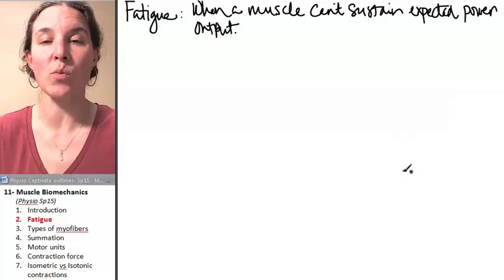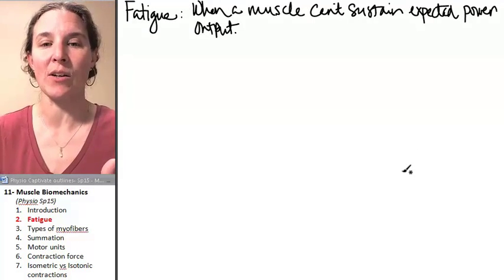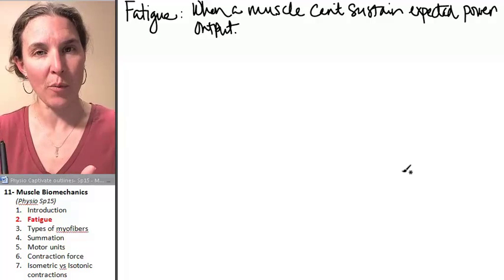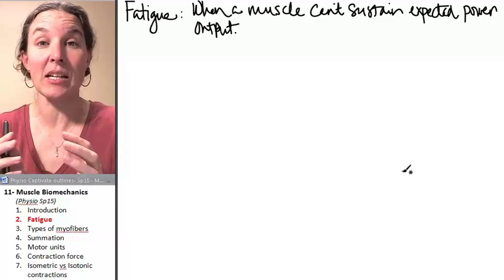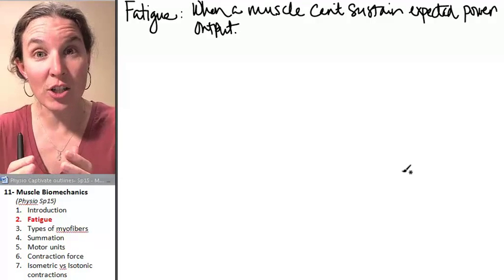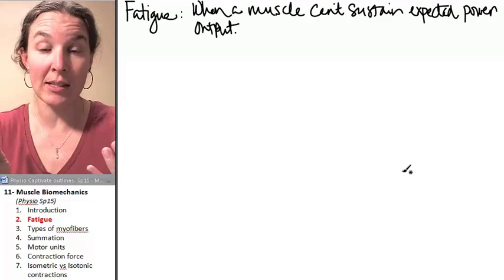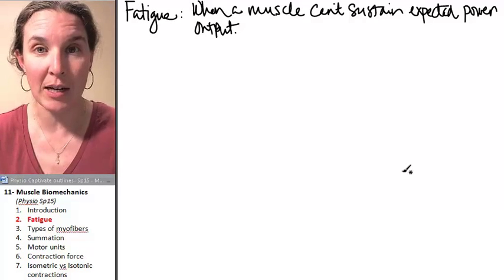Fatigue of a muscle happens when that muscle can't sustain its expected power output. So for whatever reason, the muscle is attempting to contract, but the contraction is not as strong as you would hope or expect it to be.